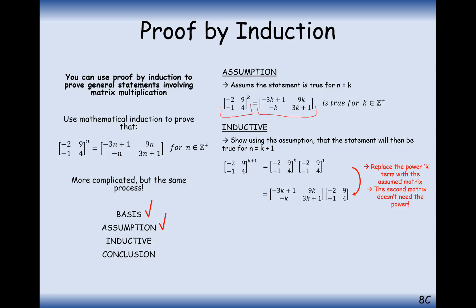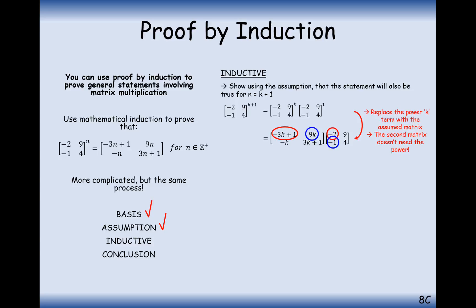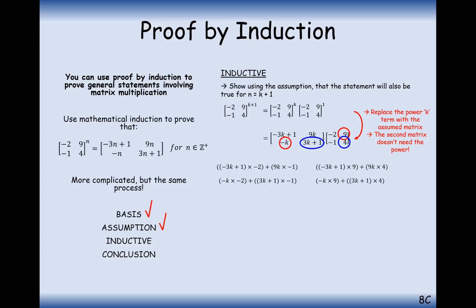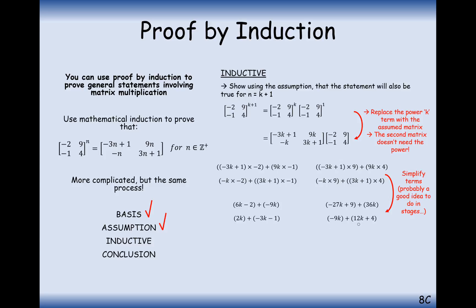We split this up into a power of k and a power of 1, then simplify the power of k using our assumption step, replacing the k-powered matrix with the assumed matrix. Now let's expand the brackets — all we've got to do is matrix multiplication. Going along and down: (−3k+1)×(−2) + 9k×(−1) for the first cell, and so on for each of the four cells, which can be simplified to 6k−2, −9k, −27k+9+36k, 2k−3k−1, and −9k+12k+4.